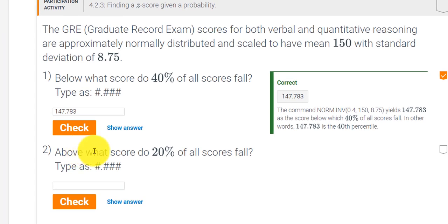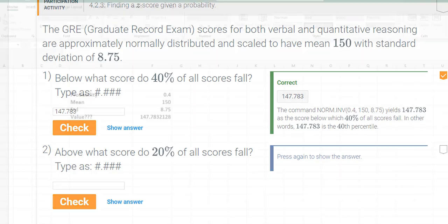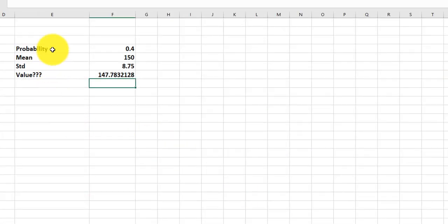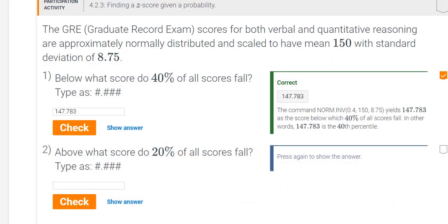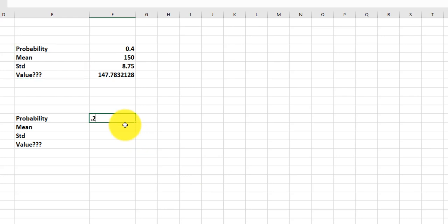That says above what score do 20% of all scores fall? So we're going to do the similar calculation, except there's one tiny change. So I'm going to copy this, put it down here. The probability changes to 20%. So I'll type in 0.2. The mean is still 150. The standard deviation is still 8.75.